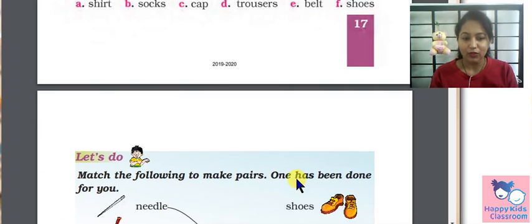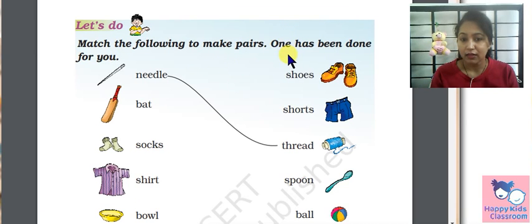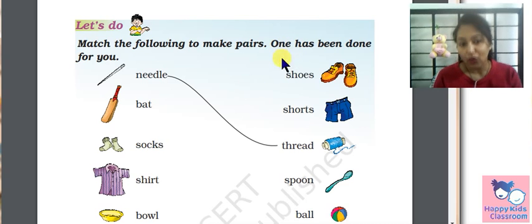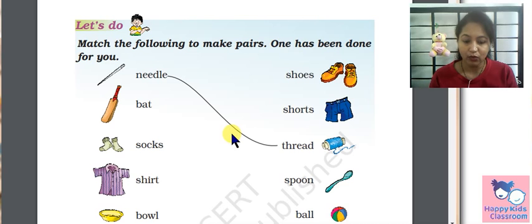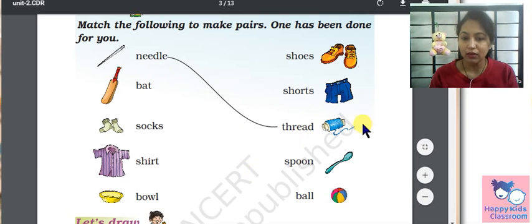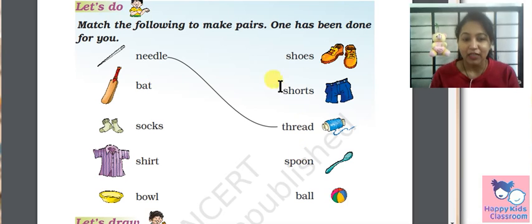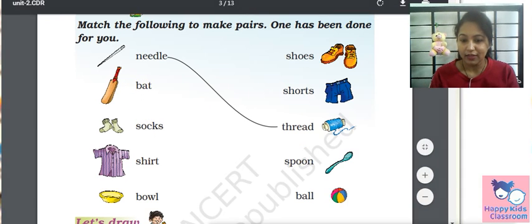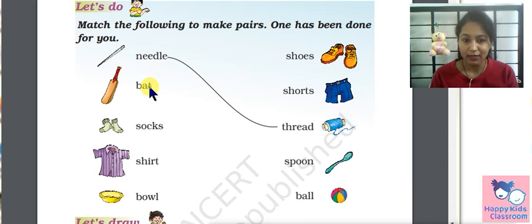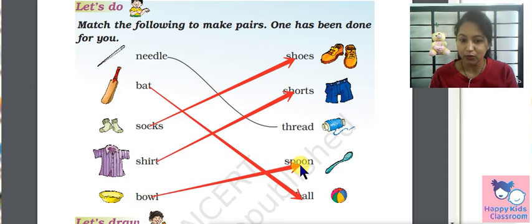The next exercise is matching. Match the following to make pairs. One has been done for you. Needle and thread is a pair. Bat and ball, socks and shoes, shirt and shorts, bowl and spoon.